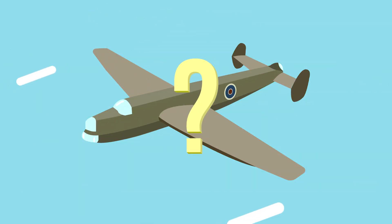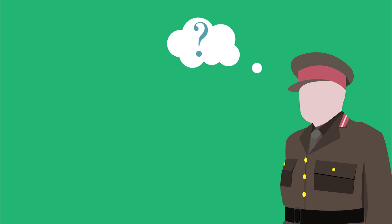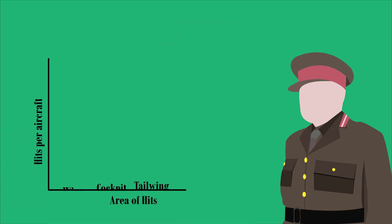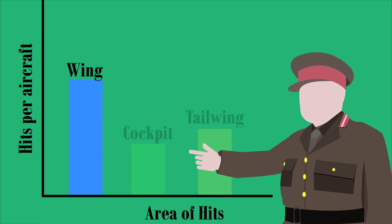So where should we put that protection? The exact same question was floating in the heads of the British commanders in the Second World War. They had data on the planes that returned home and where they were hit. The suggestion was made to put armor where the most bullet holes are, since that is apparently where the planes are being hit. The fewer holes, the better, right?